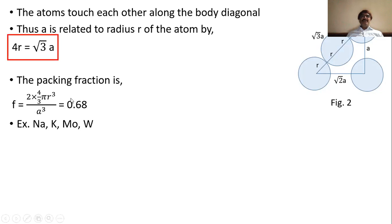0.68 is less than 0.74, and hence BCC is a loose packed structure. Examples include sodium (Na), potassium (K), molybdenum (Mo), and tungsten (W).